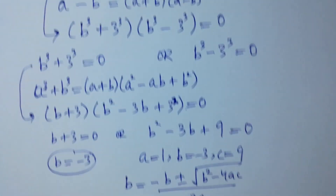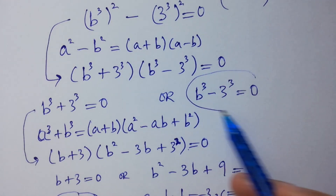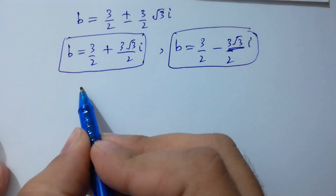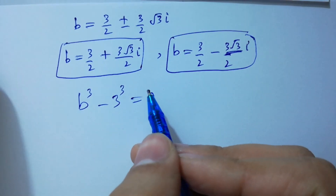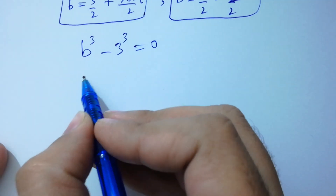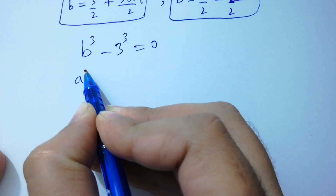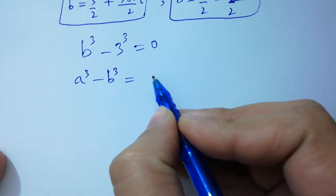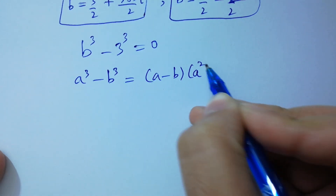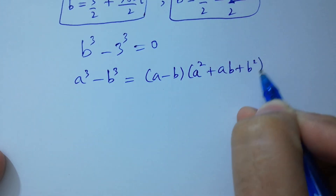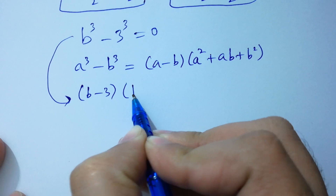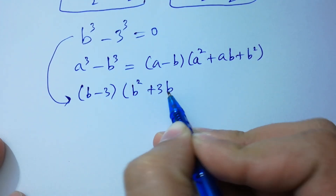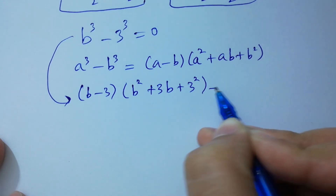Next, B cubed minus 3 cubed equals 0. We apply the formula A cubed minus B cubed equals A minus B times A squared plus AB plus B squared. Applying it here: B minus 3 times B squared plus 3B plus 3 squared equals 0.